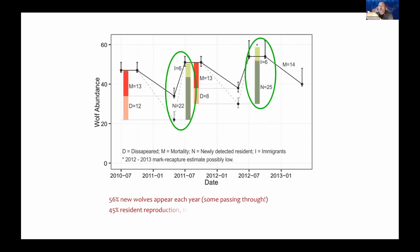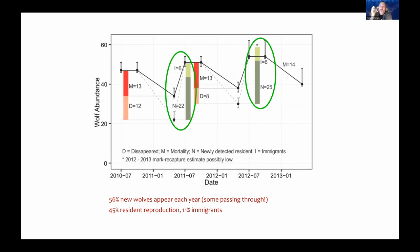We also documented increases in the population through recruitment. Some of this was through immigration, but interestingly a large part was through reproduction from the packs that we know — the dark green part — which is actually knowing the parents of the new animals. This showed the high flexibility of the wolf population.